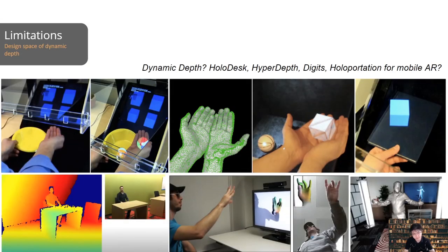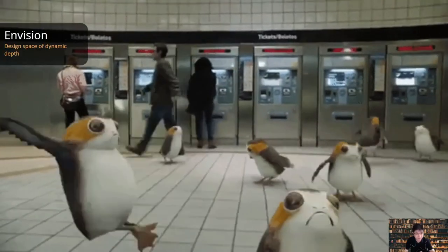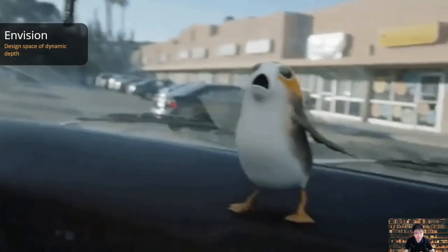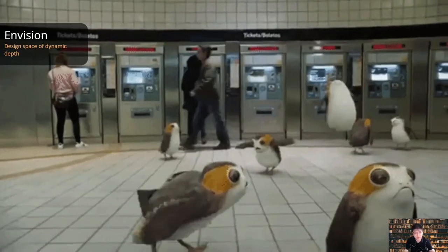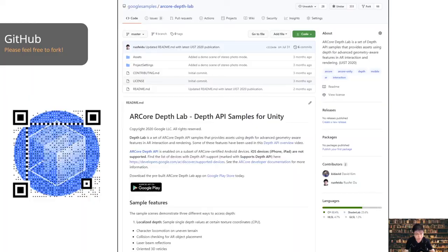As for limitations, DepthLab is designed to enable geometry-aware AR experiences on phones with and without time-of-flight sensors. However, we have not yet explored more of the design space of dynamic depth. In the future, we envision live depth to be available on many IoT devices with cameras or depth sensors. Each pixel in the depth map could be associated with a semantic label, helping computers better understand the world and making it more accessible for us.